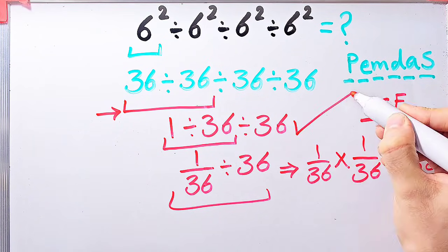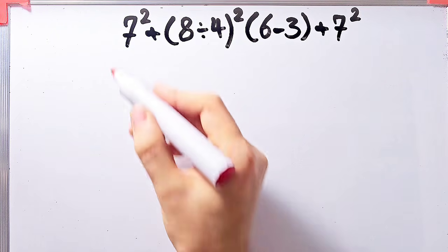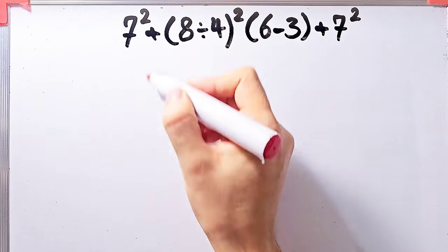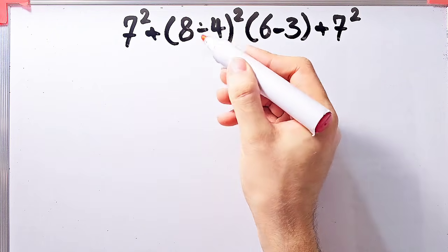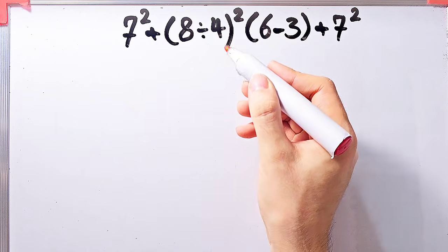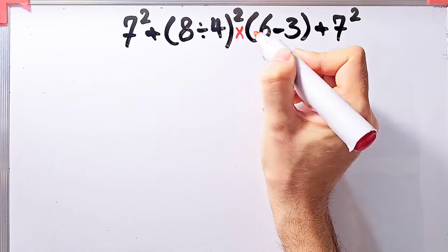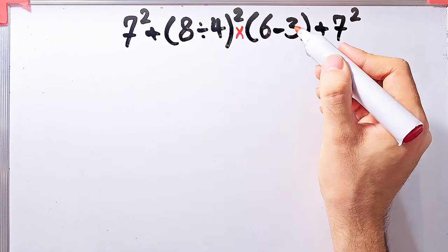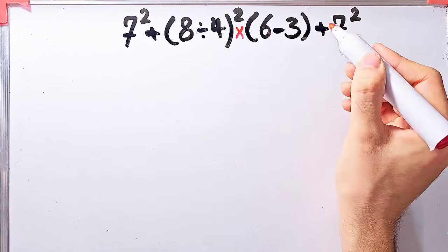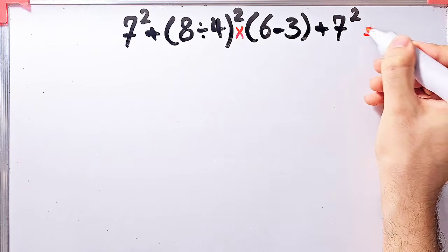Let's solve another question about the PEMDAS rule: 7 to the power of 2 plus open parenthesis 8 divided by 4 close parenthesis, then all of that to the power of 2, then times open parenthesis 6 minus 3 close parenthesis, plus 7 to the power of 2. What is the answer?